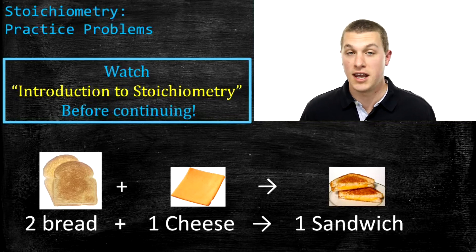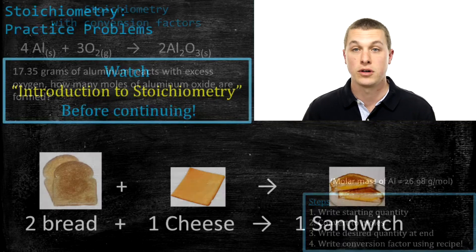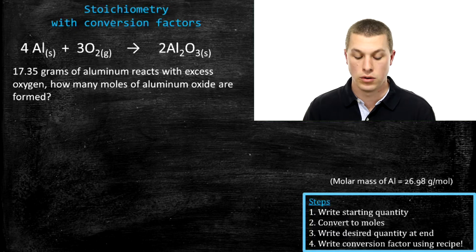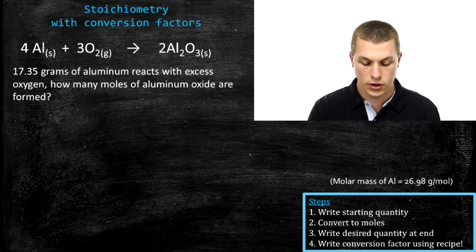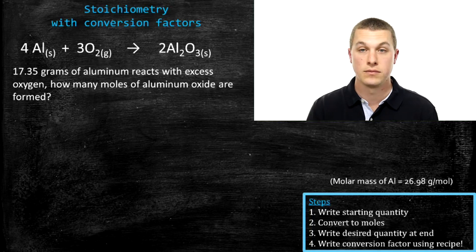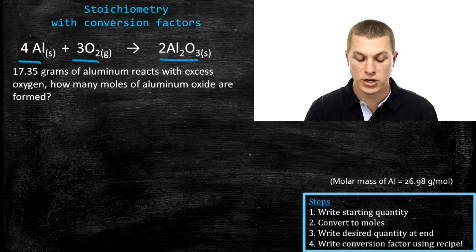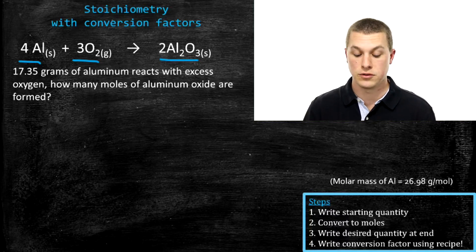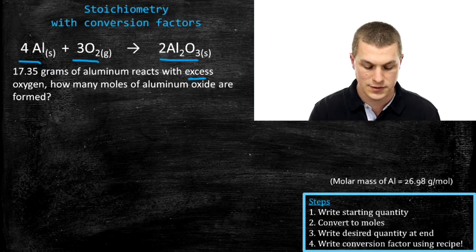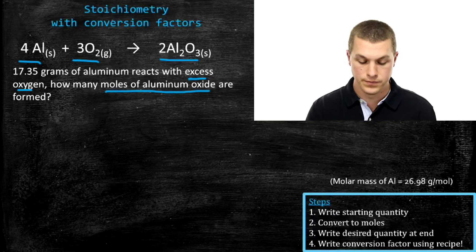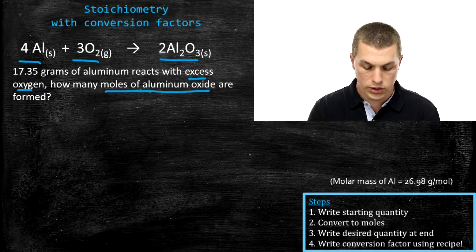Let's take a look at our first stoichiometry problem. It says: 17.35 grams of aluminum react with excess oxygen — how many moles of aluminum oxide are formed? We have aluminum metal combining with oxygen to form aluminum oxide. We start with 17.35 grams of aluminum, and since there's excess oxygen, we don't need to worry about it running out. We want to know how many moles of aluminum oxide are formed.